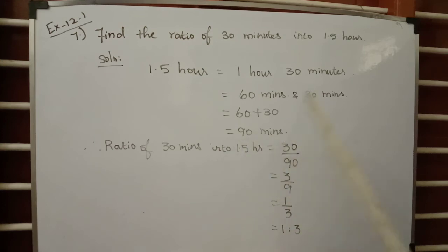Now we can calculate the ratio of 30 minutes to 1.5 hours, which equals 30 divided by 90 minutes. 30 by 90, when you simplify you get 3 by 9, and when you simplify again with the common divisor 3, you get the resultant value as 1 by 3.